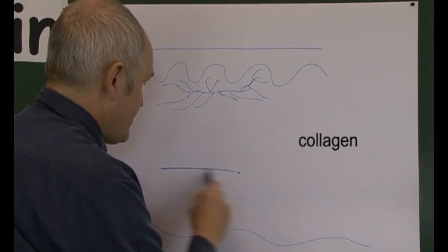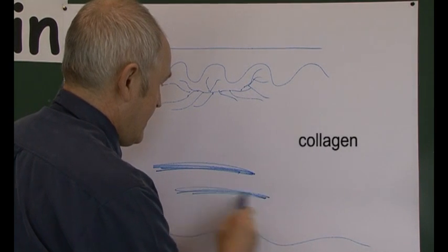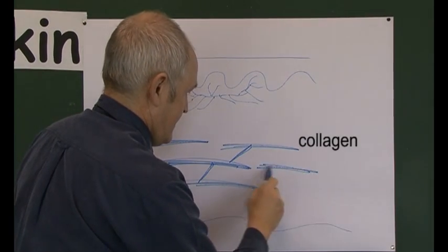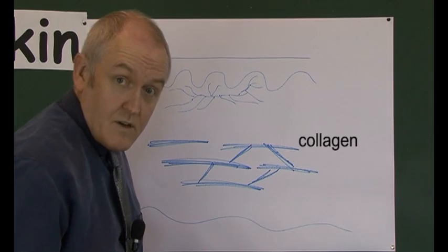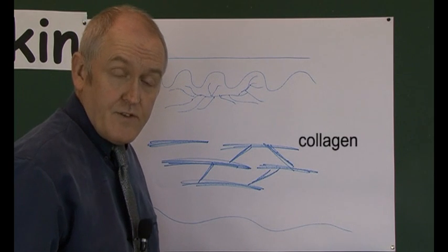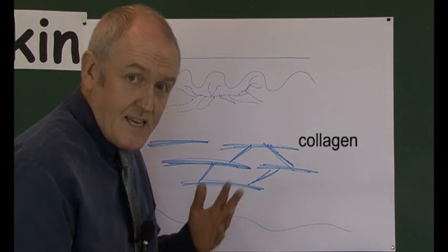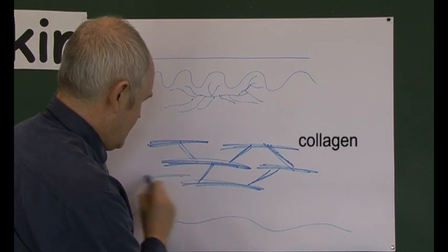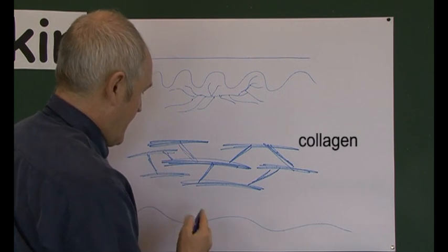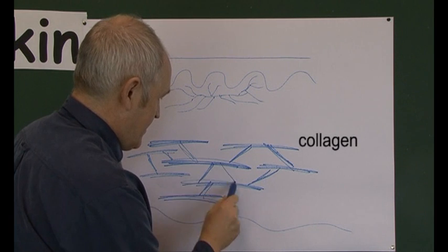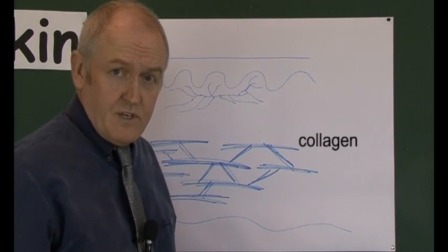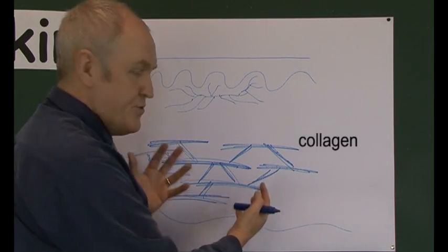But deeper down the collagen fibers are much thicker and they're joined together. Now most of the collagen fibers actually run in one direction parallel to the surface of the body, but they are interconnected. And an interconnected structure forms a network, and the Latin term for a network is reticular. So that's why this is called the reticular layer of the dermis, and this gives the dermis huge tensile strength.